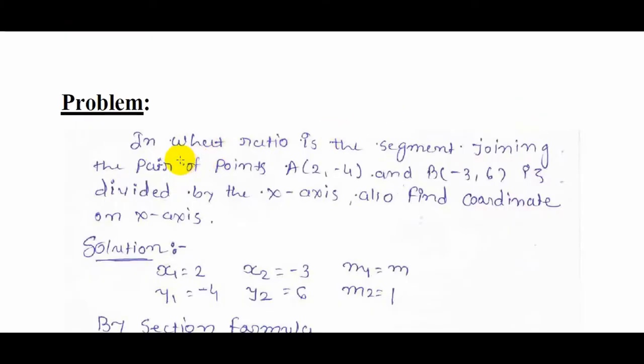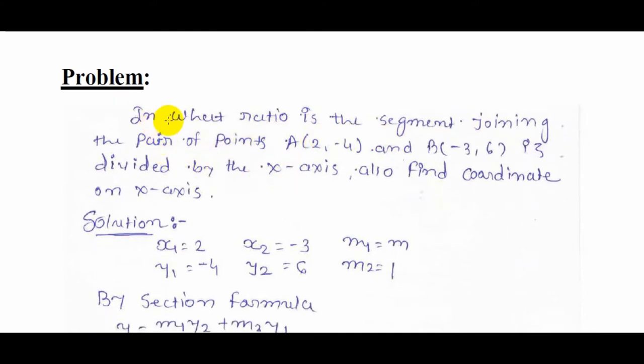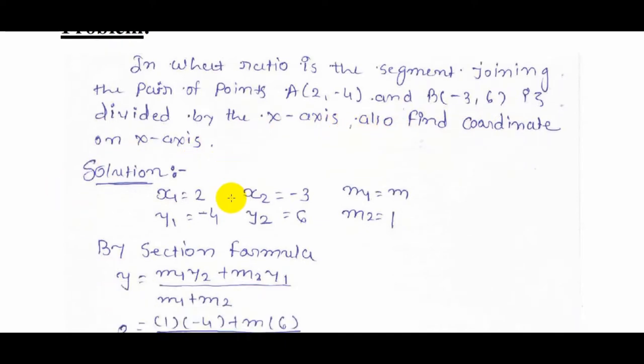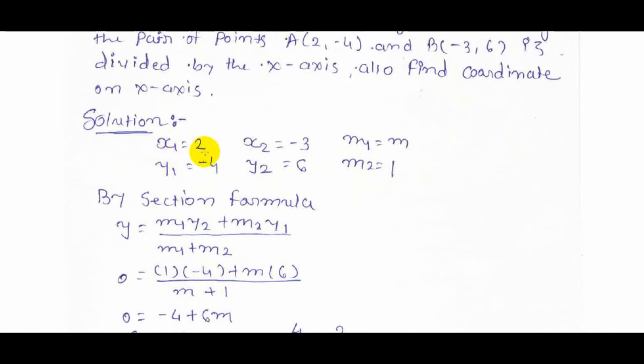Welcome friends. In today's video we will learn how to find the ratio when points are given. Our problem is: In what ratio is the segment joining the pair of points A(2, -4) and B(-3, 6) divided by the x-axis, and also find the coordinate on the x-axis?